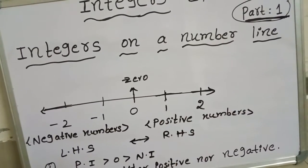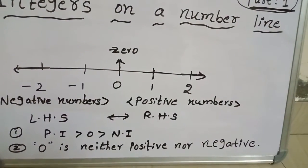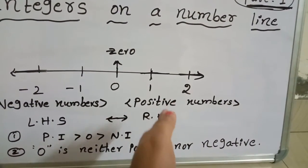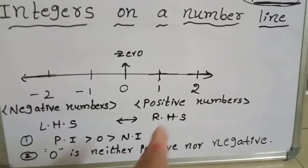the right side of zero are called positive numbers. The numbers which are on the left side of zero are called negative numbers. Here, always positive numbers are greater than zero and negative numbers. Zero is smaller than the positive